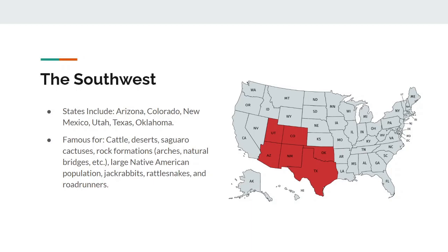The final region we'll be talking about today is the Southwest. States here include Arizona, Colorado, New Mexico, Utah, Texas, and Oklahoma. This region is famous for cattle, deserts, saguaro cacti, rock formations, arches, natural bridges, large Native American populations, jackrabbits, rattlesnakes, and roadrunners.